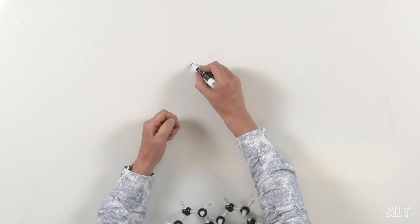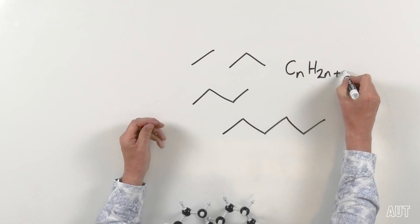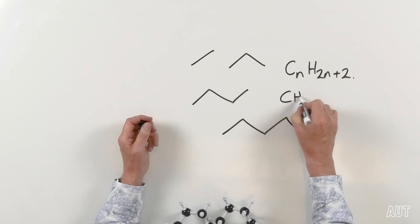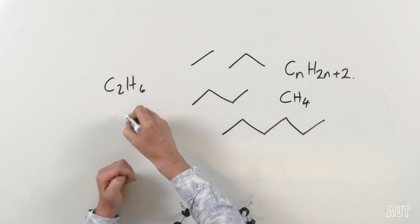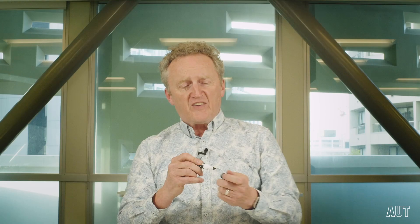We started talking about organic chemistry in terms of a series of molecules we call alkanes. With alkanes, we found that they could look like chains, and we concentrated on those chains. We found that alkanes solely consisting of chains had the formula CnH2n+2, giving us chemical formulae like CH4, C2H6, C7H16, and so on. They are all alkanes.